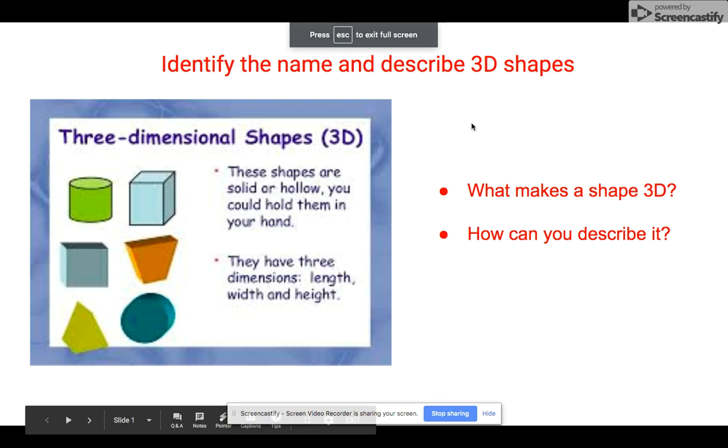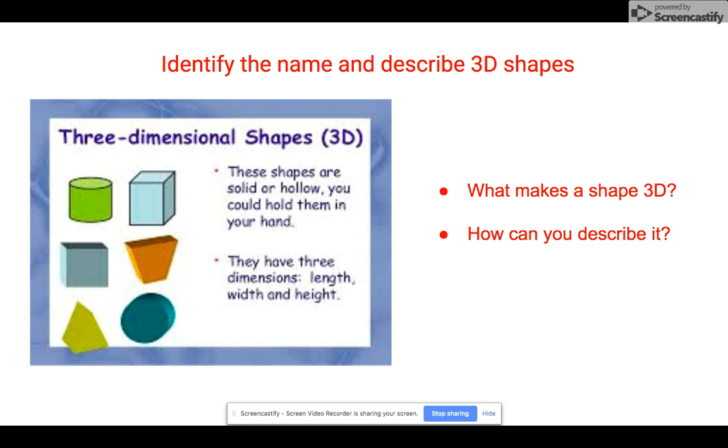We are learning to identify the name and describe 3D shapes. What makes a shape 3D? 3D stands for three-dimensional shapes. These shapes are solid or hollow—you can hold them in your hand.